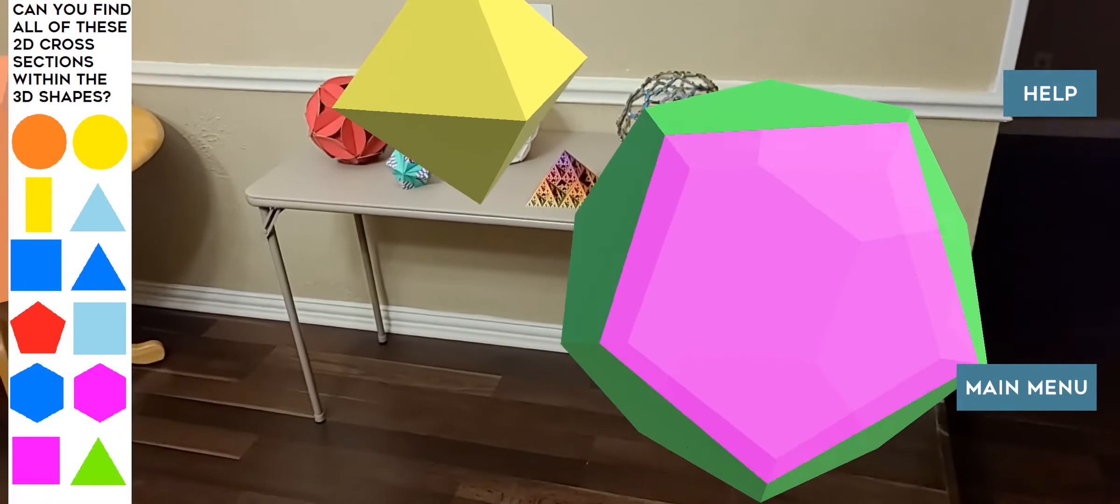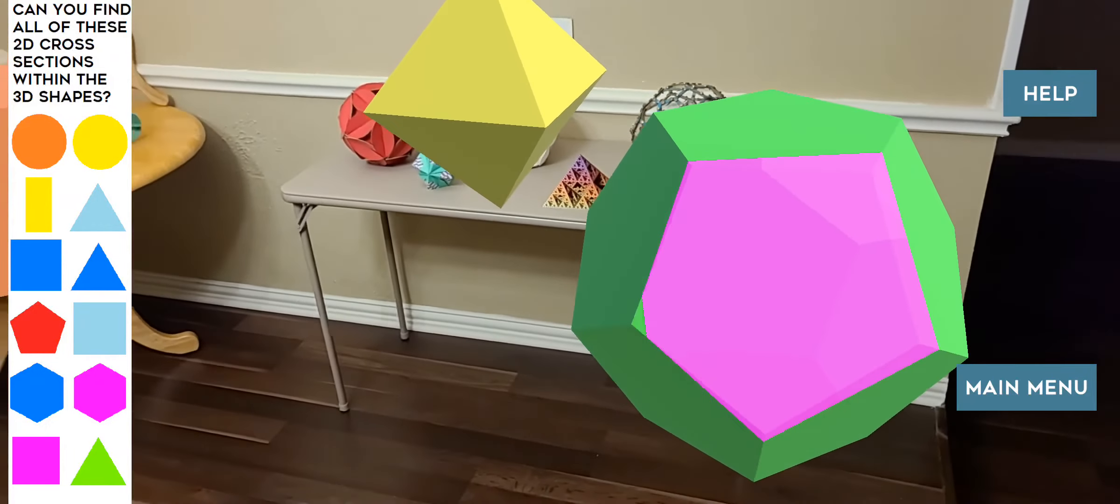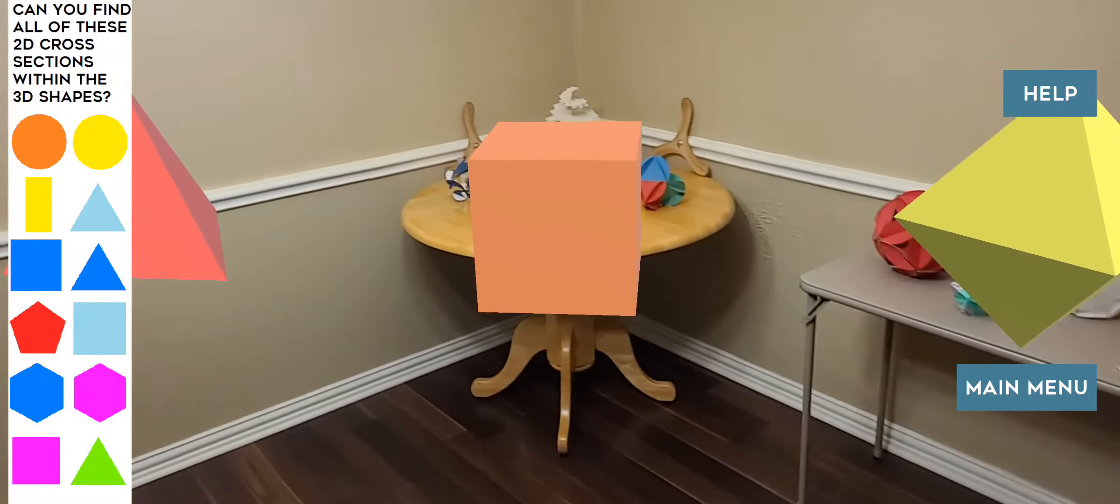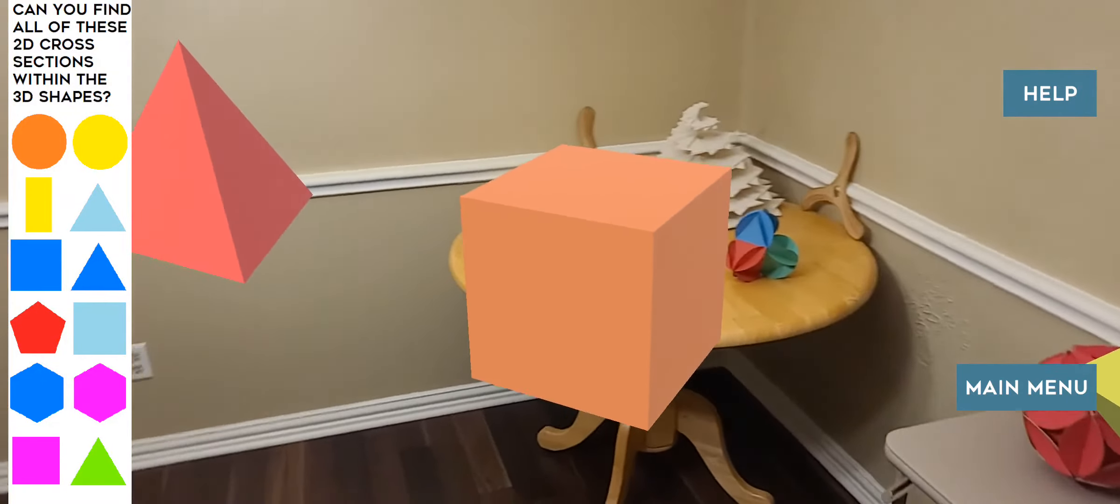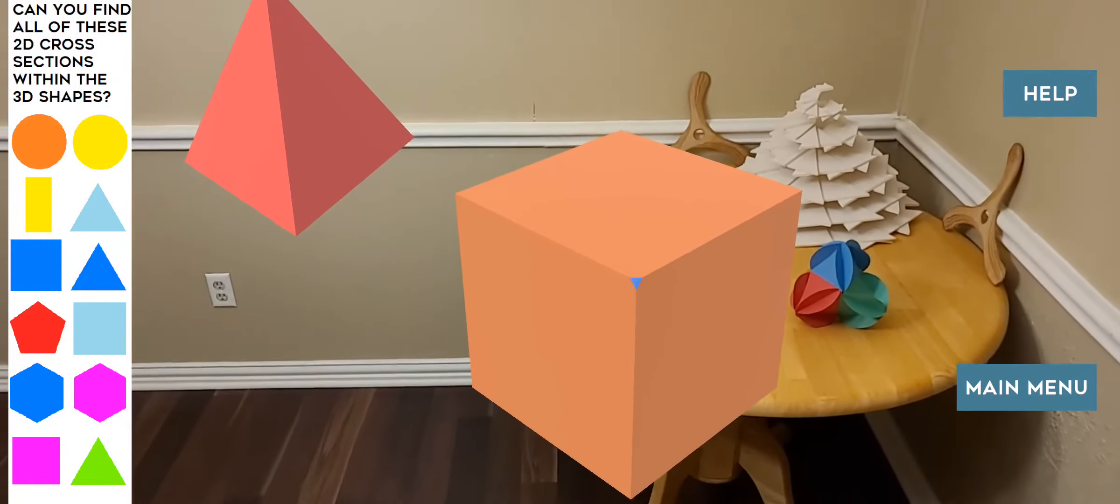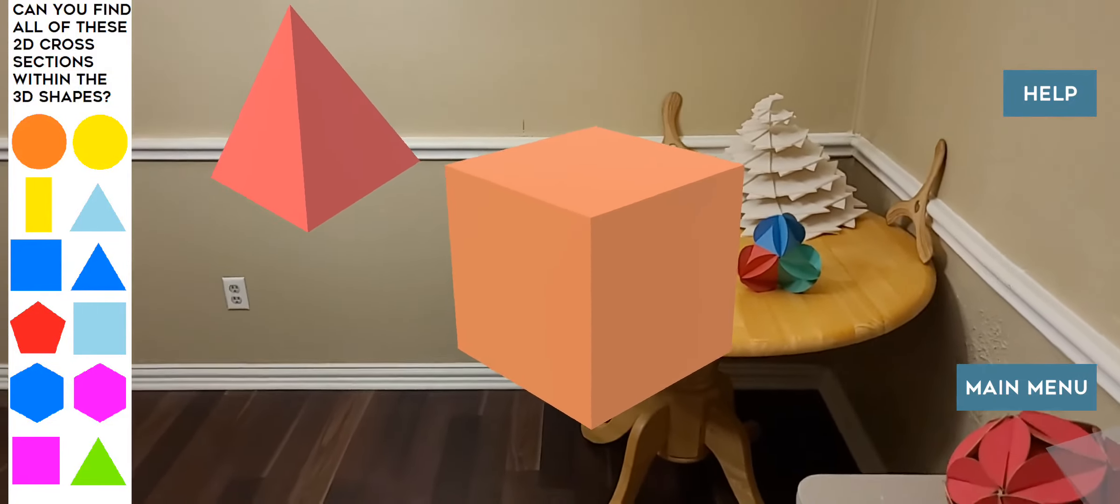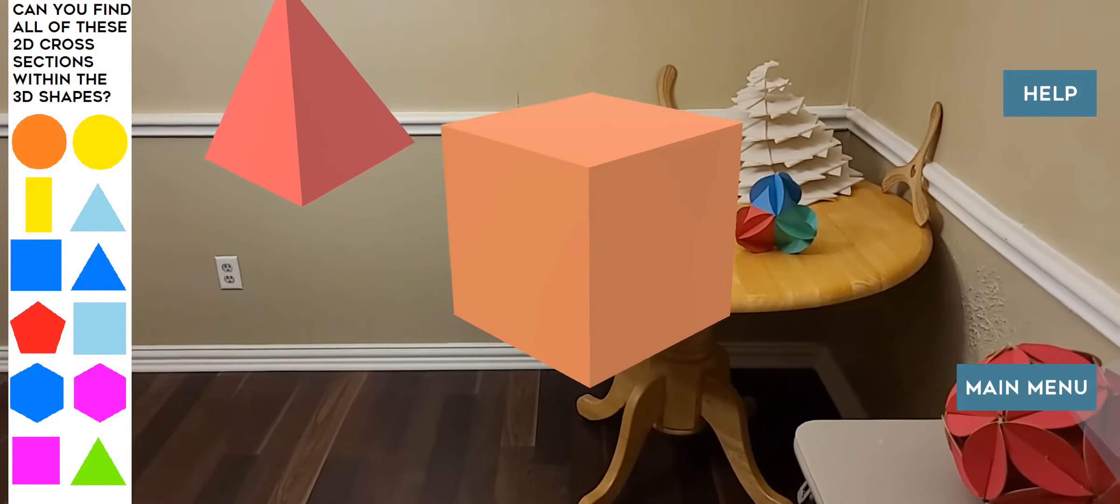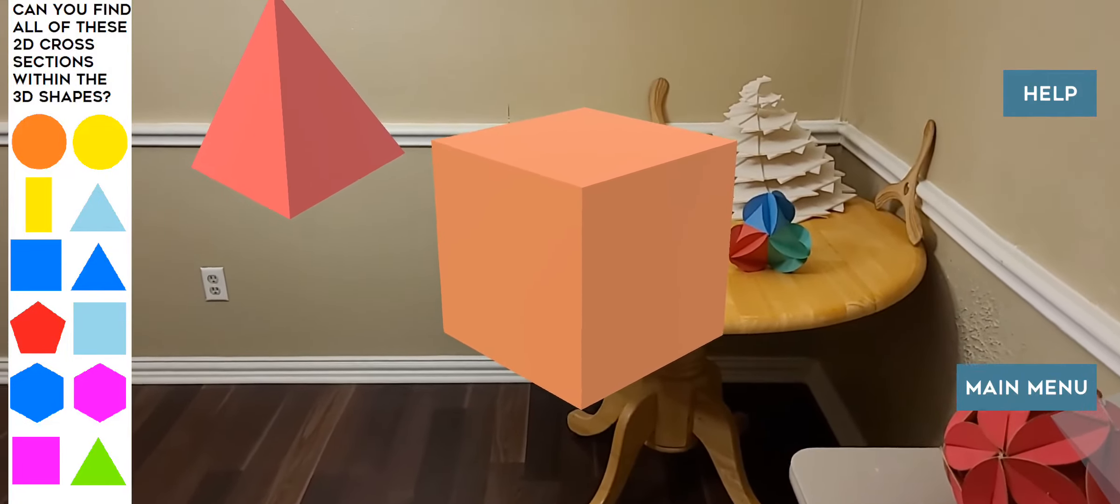This green dodecahedron, the inside is magenta. So we can deduce by the complementary colors that our blue hexagon must be inside this orange cube. However, this cube looks very much like a set of squares, not much like a hexagon.